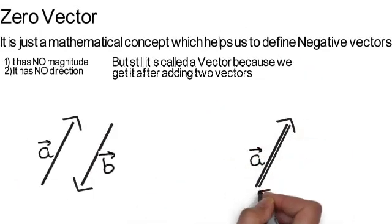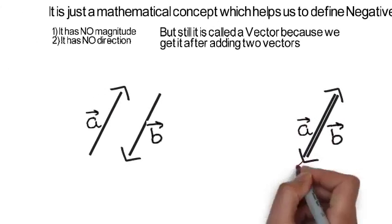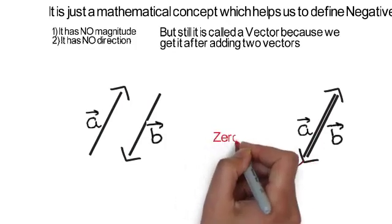Thus, if we place the tail of B over the head of A, the third side of the triangle vanishes and we call this the zero vector.